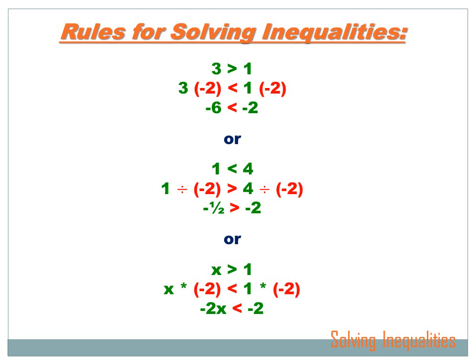Let's look at some examples, and you'll see this is obviously true. I've got 3 is greater than 1 — you know 3 is greater than 1. But if I multiply both sides of that inequality by minus 2, I get minus 6 on the left and minus 2 on the right. And minus 6 is a smaller number than minus 2 — it's further to the left on a number line. So I had to turn around my inequality sign and change it from 'is larger than' to 'is smaller than.'